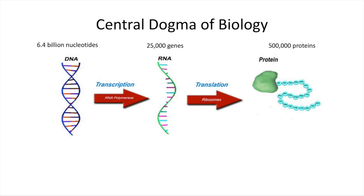Anybody heard of the central dogma of biology? We used to bow to this in grad school — it was dogma for sure. You have DNA that has genes in it that makes RNA, and that RNA eventually transcribes protein — the secret of life. With just this information there's a lot: about 6 billion nucleotides in humans, which contain about 25,000 genes, which give rise to about 500,000 different proteins. This is a ton of information, but there's actually more.